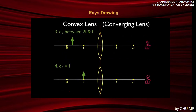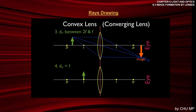Now we move the object a little closer — between F and 2F. Drawing the same three rays: parallel-F, F-parallel, and straight through the center. The image is going to be beyond 2F, so when the object is between F and 2F, the image distance is always greater than 2F. First the image was smaller, then the same size, and now it's magnified — bigger. But it will always be inverted and always a real image.